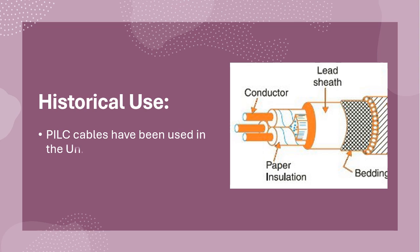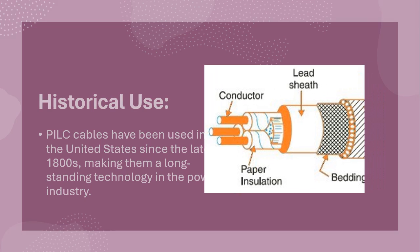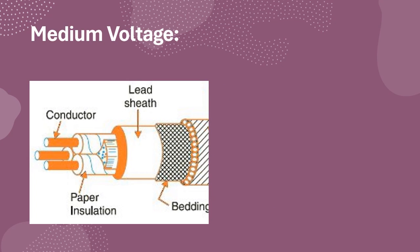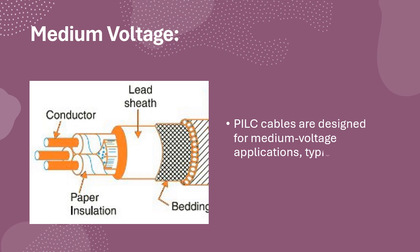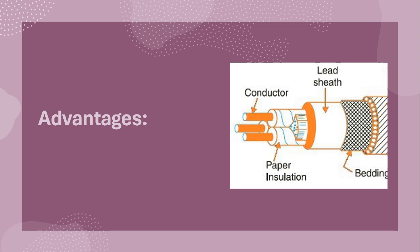PILC cables have been used in the United States since the late 1800s, making them a long-standing technology in the power industry. PILC cables are designed for medium voltage applications, typically ranging from 4.16 kV to 34.5 kV.